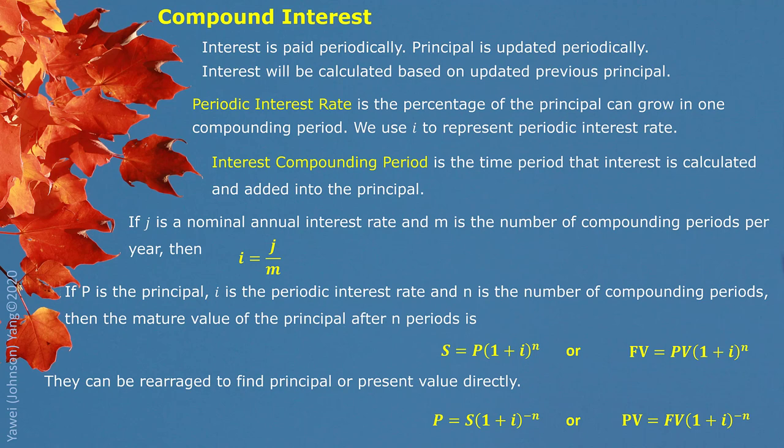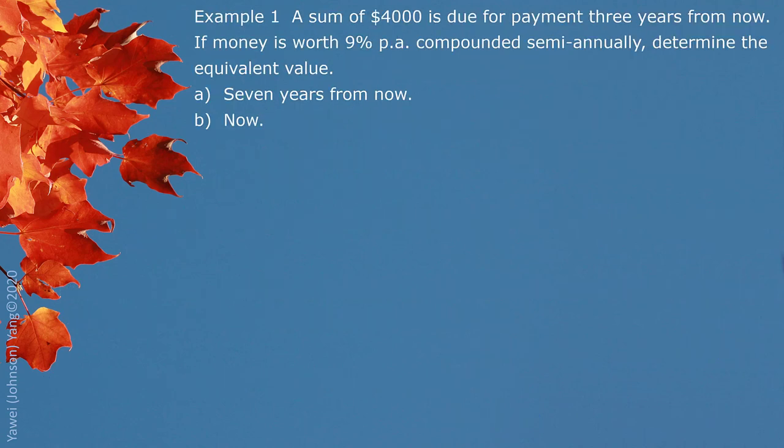Here we have the future value formula — that's our original compound interest situation. And the alternative way, finding the present value formula, will be shown here.